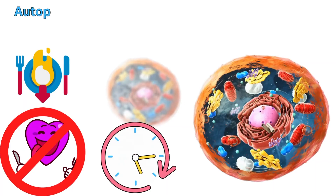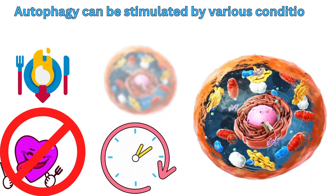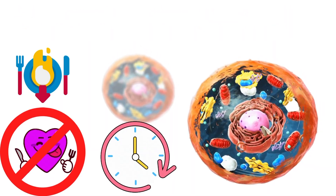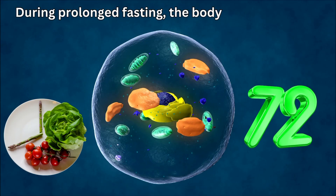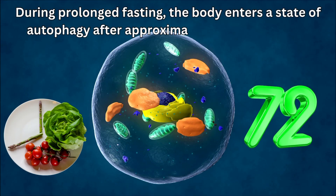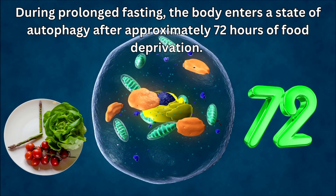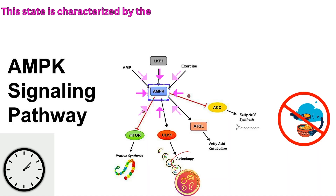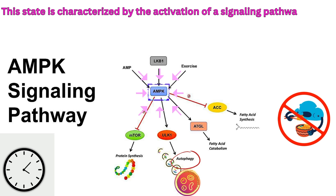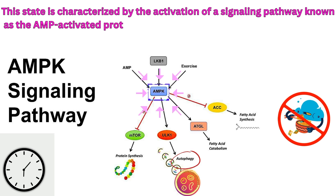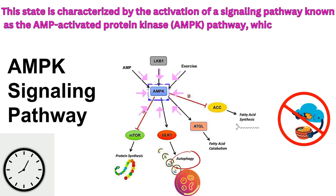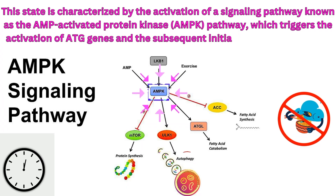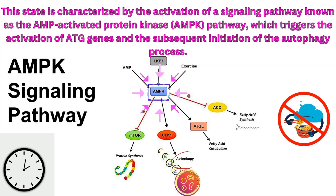Autophagy can be stimulated by various conditions, including prolonged fasting or calorie restriction. During prolonged fasting, the body enters a state of autophagy after approximately 72 hours of food deprivation. This state is characterized by the activation of a signaling pathway known as the AMP-activated protein kinase, or AMPK pathway, which triggers the activation of ATG genes and the subsequent initiation of the autophagy process.